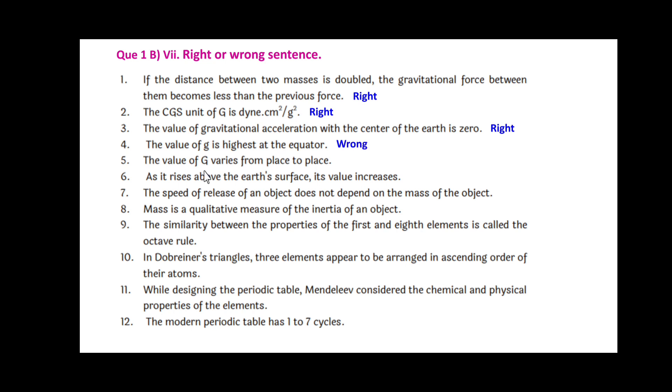The value of capital G, that is the gravitational constant, varies from place to place. This is wrong. As it rises above the Earth's surface, its value will increase. It is wrong.